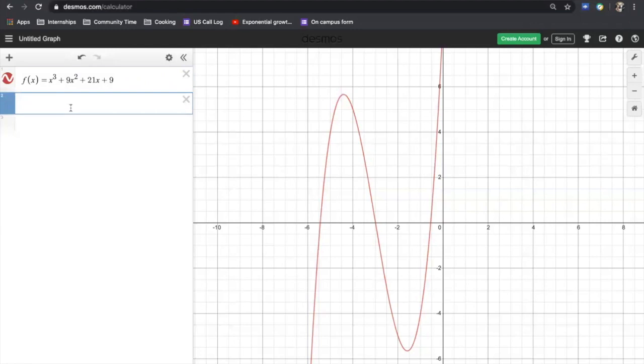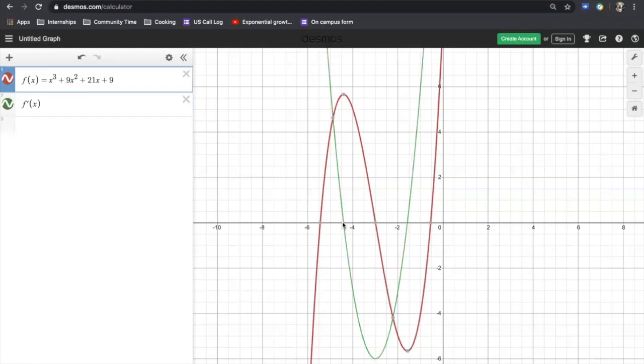So if I was to graph the first derivative, we get this green graph. This green graph matches up perfectly with what we saw on the original function f(x). Relative max is our zero of our first derivative. Relative min is our other zero.